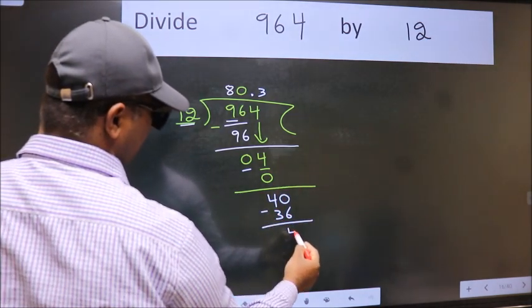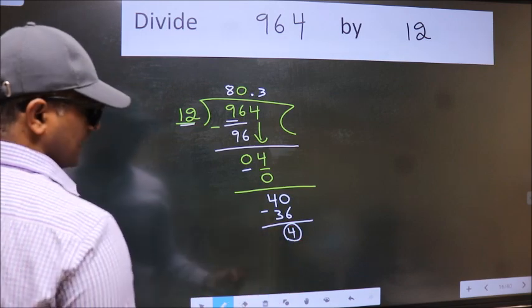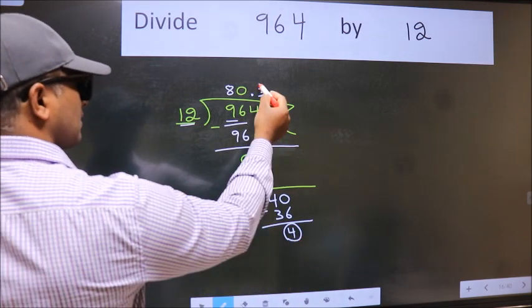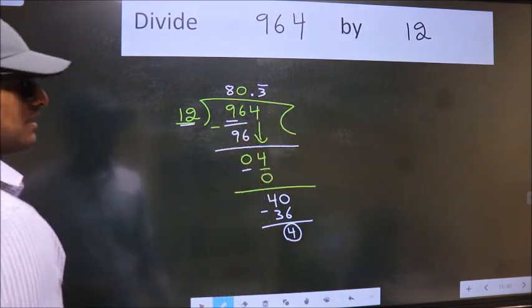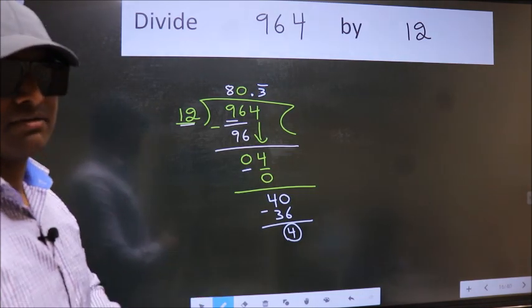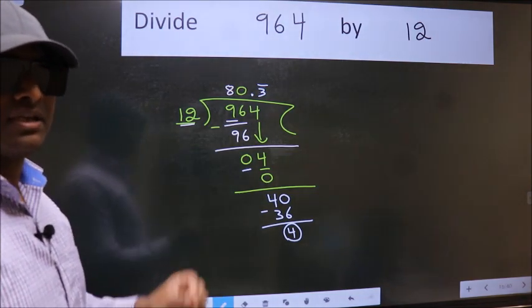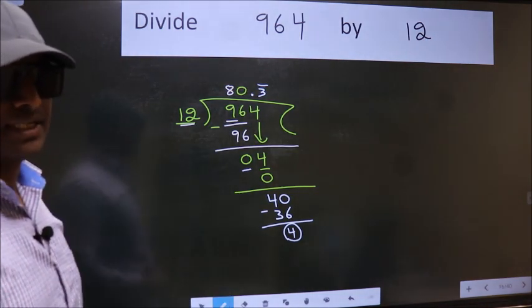Now we subtract. We got 4 again. That means we get bar on this number. Did you understand where the mistake happens? You should not do that mistake.